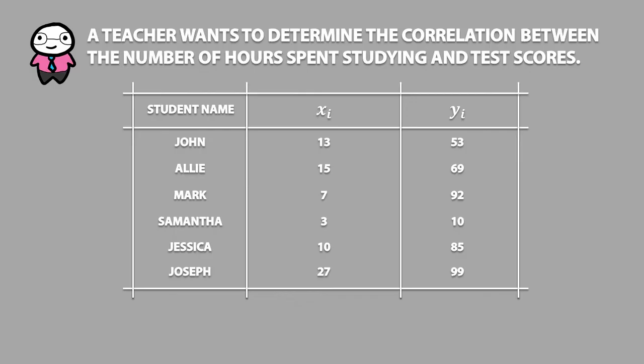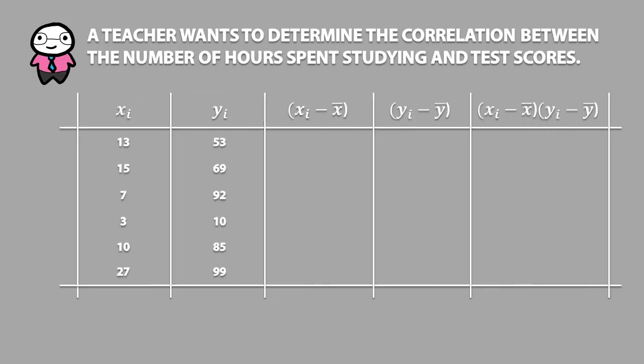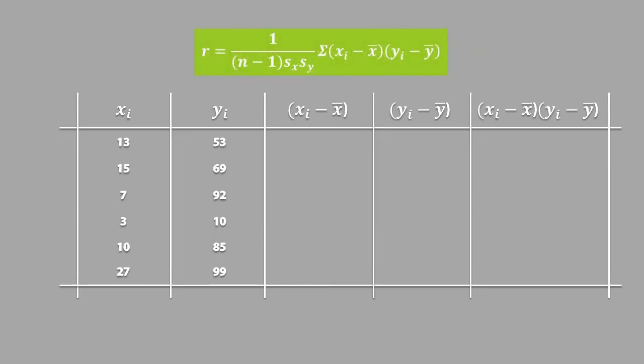When determining correlation, it's a good idea to make a table to help you with your calculations. This table corresponds to the formula, specifically this part of the formula. So the first step is to calculate the means for the x values and the y values, which you should already know how to do.